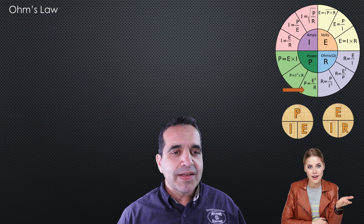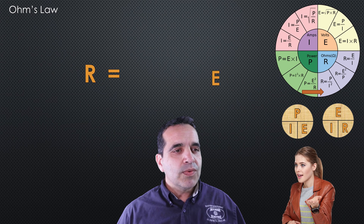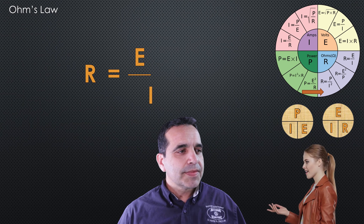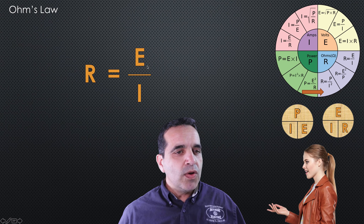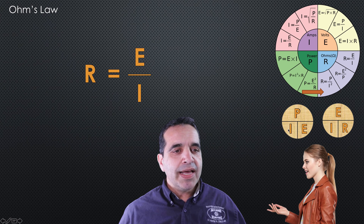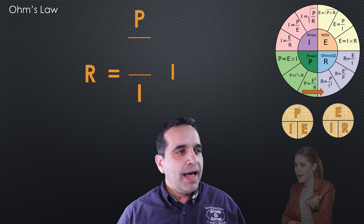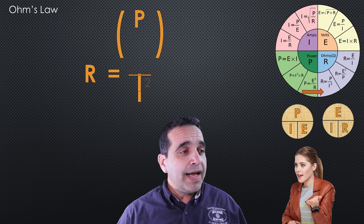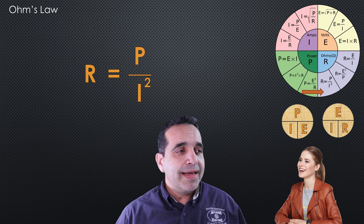Next we're looking for resistance. We start with R equals E over I. In this formula we have resistance and amperage, but we need wattage. Voltage equals wattage divided by amperage, so we replace E with P divided by I. There are two I's, so we square them, bring the P down — and there you go: resistance equals power divided by amperage squared, R equals P over I squared.